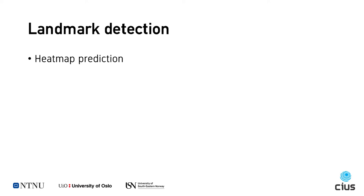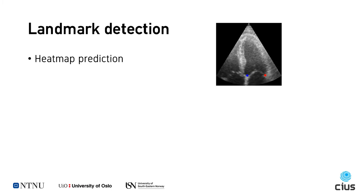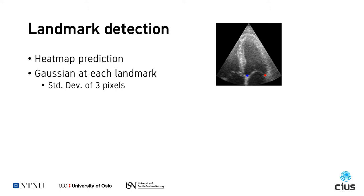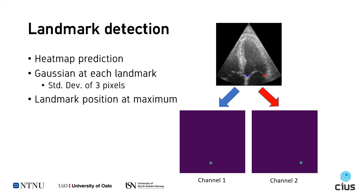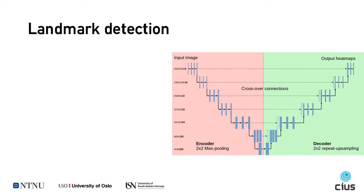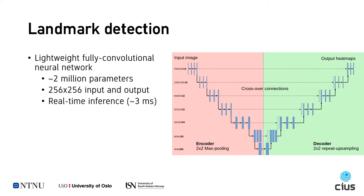For the annulus landmark detection, we formulated the problem as a heatmap prediction problem. For each annotated image, we created a heatmap with a 2D Gaussian with a standard deviation of 3 pixels placed at the annotated landmark, and used two different channels for the left and right annulus landmarks. The landmark positions can then be inferred from the heatmap as the position with the maximum value. We train a lightweight, fully convolutional neural network to learn the heatmap prediction. For this, we used a network similar to that used for segmentation, often referred to as a U-Net. The network had about 2 million parameters, uses 3×3 convolutions, rectified linear units, max pooling, and upsampling layers.